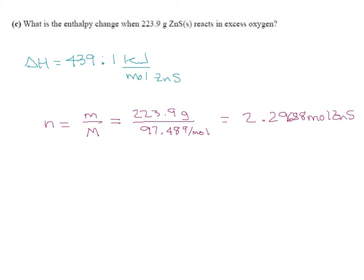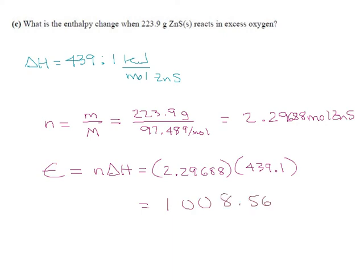I think I did the first two examples without thinking about significant digits and that was not good of me. I'll try to tighten up about that. So we'll go with the formula for this one. E equals n delta H. How many moles? This many moles. Delta H, 439.1. And that gives us 2.29688 times 439.1 equals 1,008.56 kilojoules. Okay. To four significant digits, that would be 1,009 kilojoules.